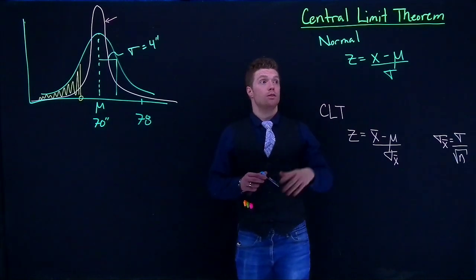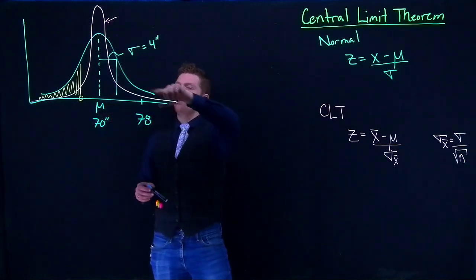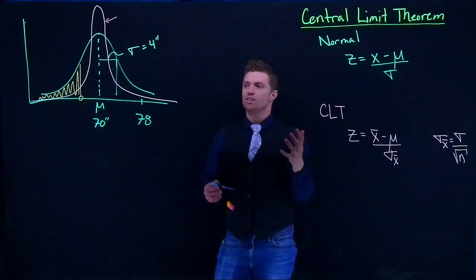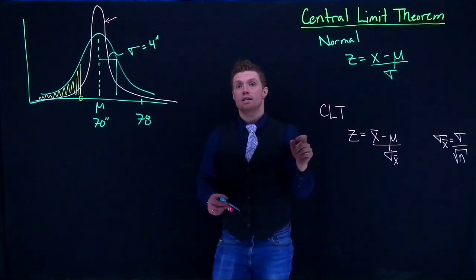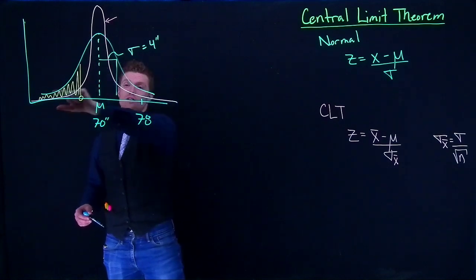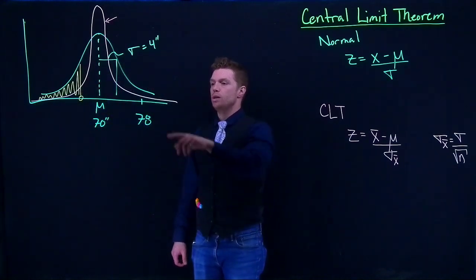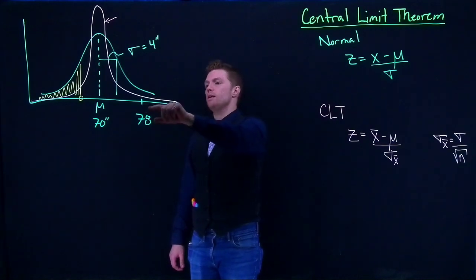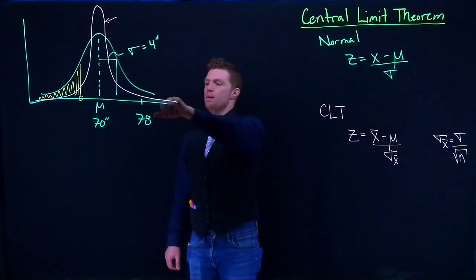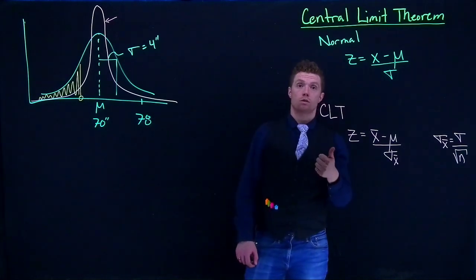Now, when we are talking about the normal distribution, if this is all the people, or all men in the United States, and we were to measure their individual heights, we could basically make the histogram, which is kind of what this normal distribution looks like. We could say that there are only 2% of men, or something like that, who are 78 inches or taller.